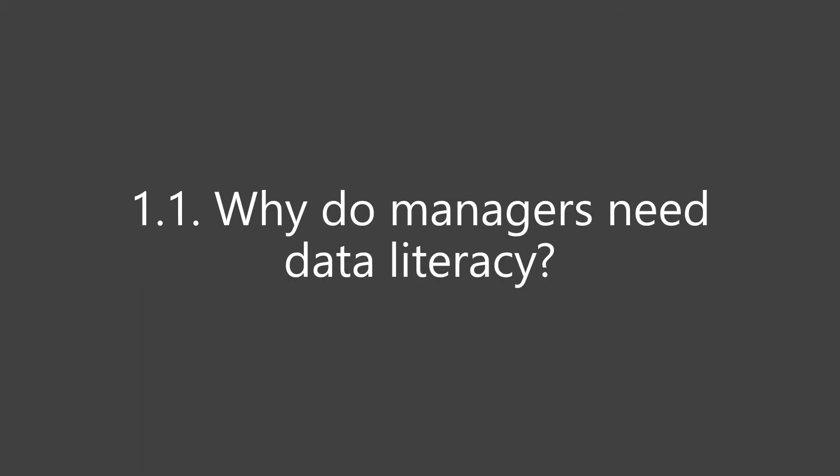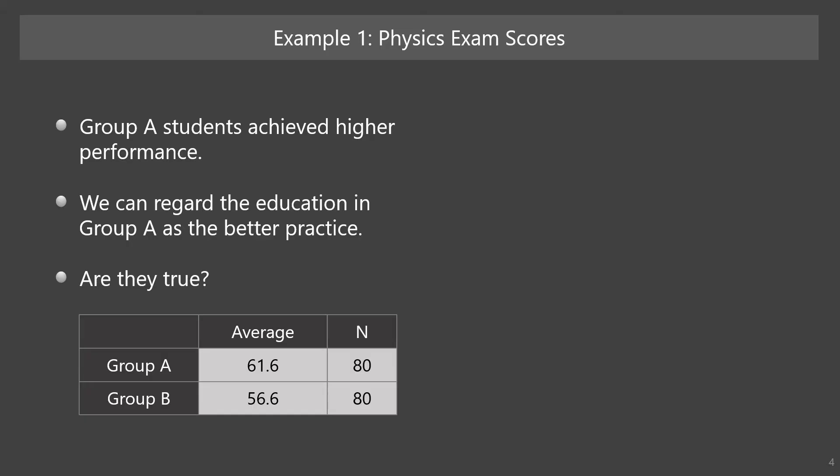As an introductory section, let me explain why we need to have data literacy. Let's see the table below. It shows the average score of a physics exam in two student groups. The perfect score is 100. The average score for group A is 61.6 and that for group B is 56.6.